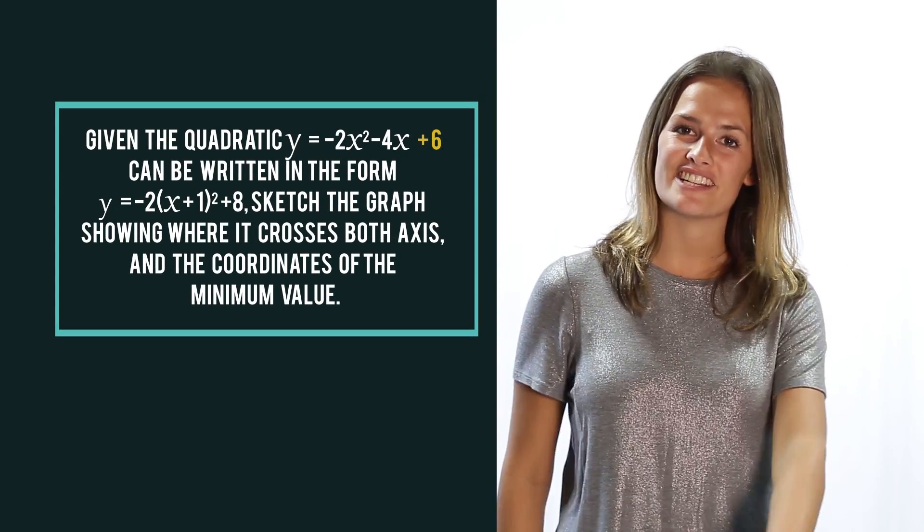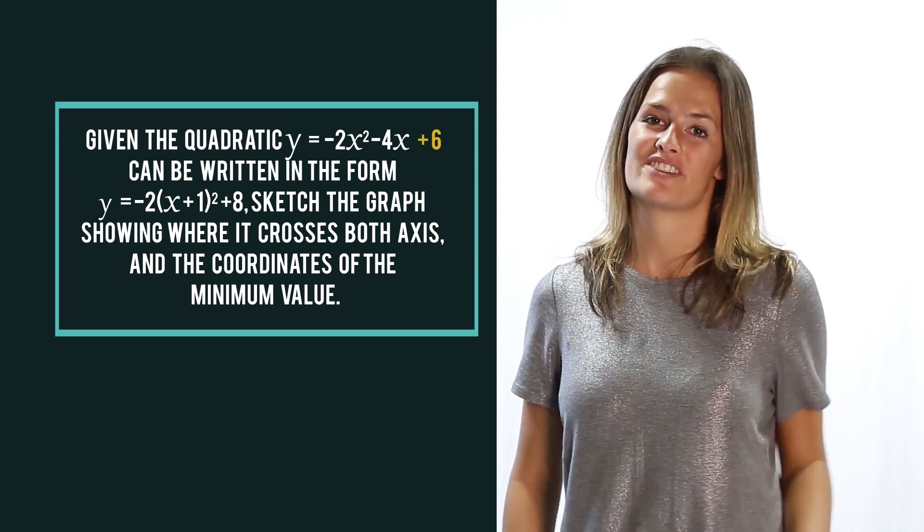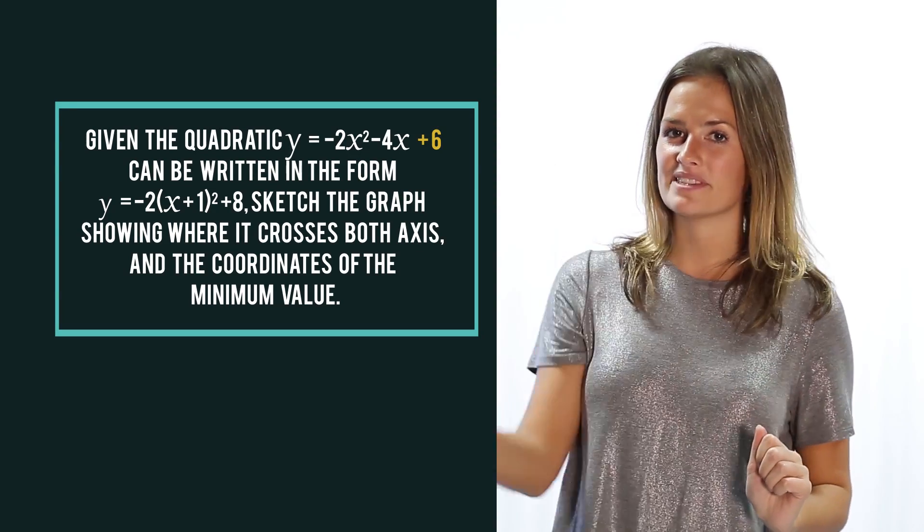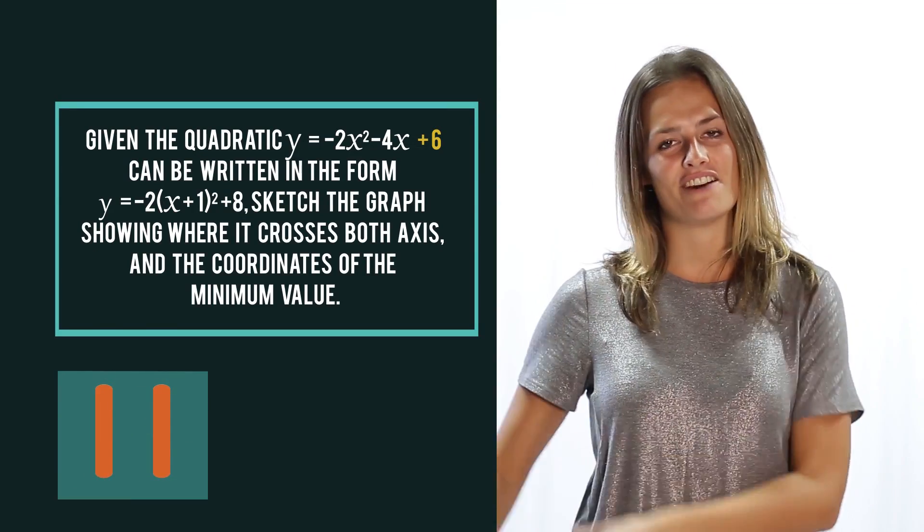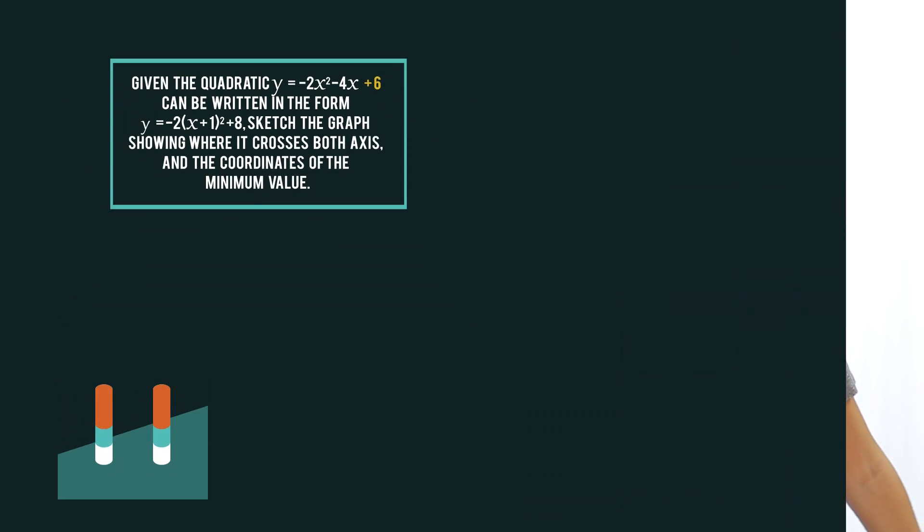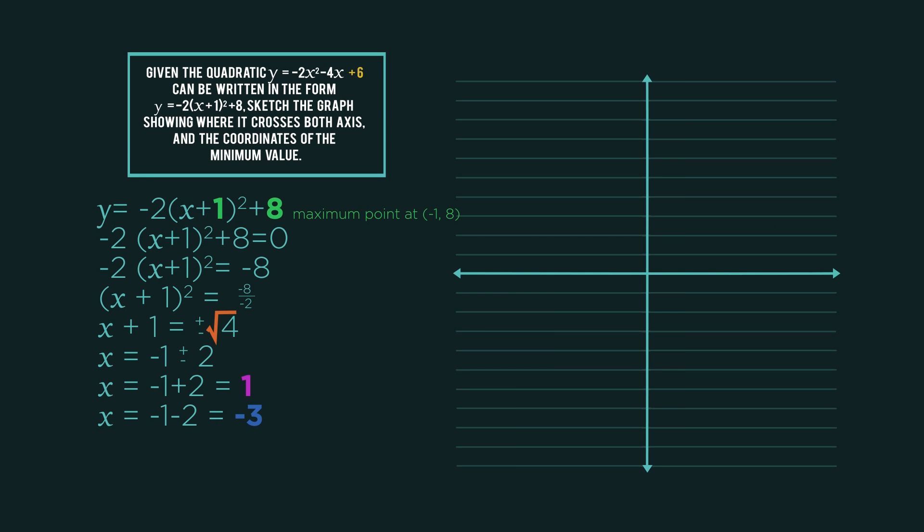One more for you to look at. Be careful, it's a negative quadratic so it's going to be an upside down u-shape. Pause the video, sketch the graph, and click play when you're ready to check. Did you get it right?